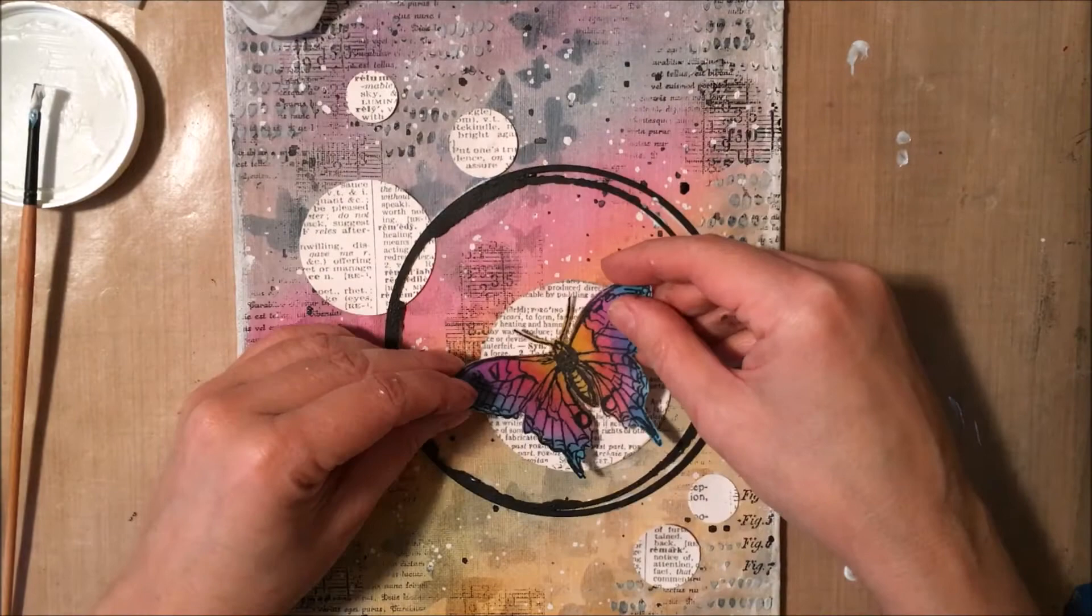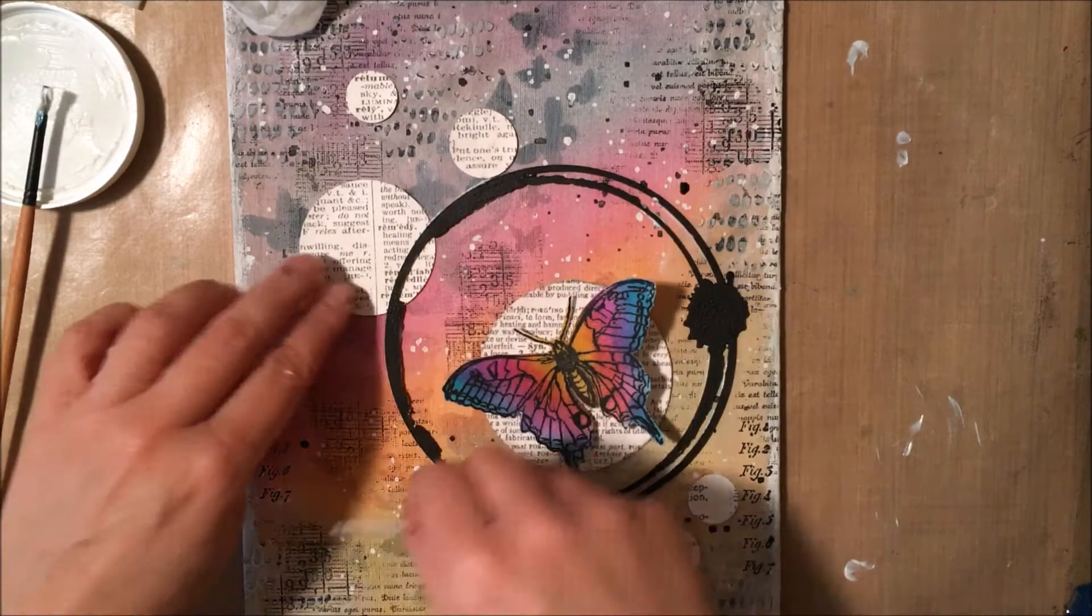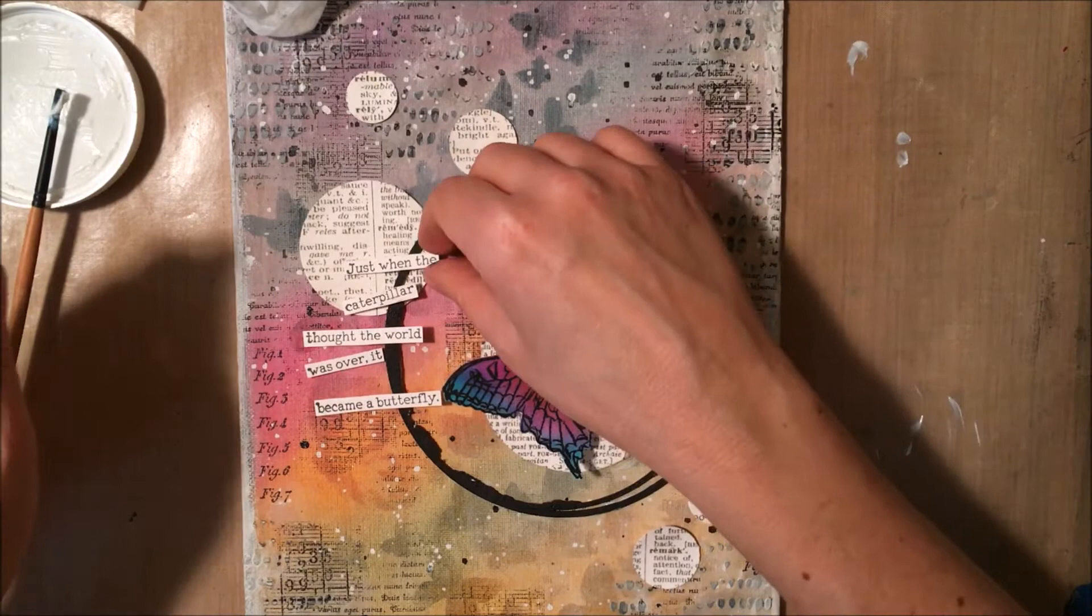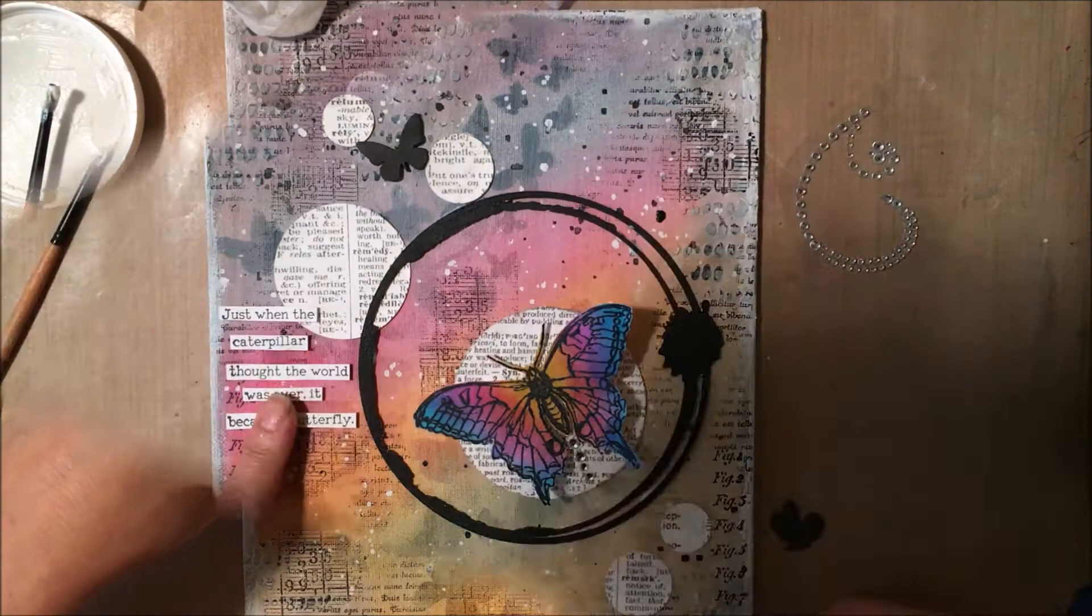And then my sentiment I actually cut apart not each individual word but just in little parts of the sentence. And now I'm just trying to determine where exactly I want my sentiment to go. Because I felt like it disappeared a little bit on the white circle. So just playing around with that and here you can see I finally settled on a spot which works.